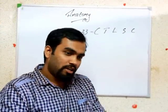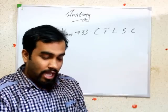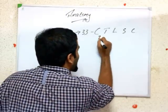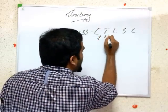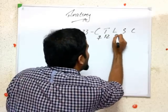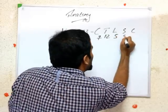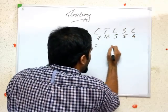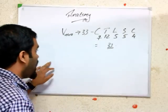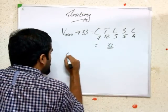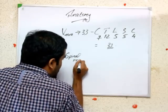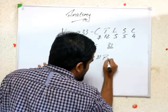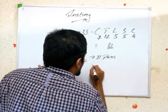A common question: how many vertebrae are there? There are 33 vertebrae. The formula is: Cervical = 7, Thoracic = 12, Lumbar = 5, Sacral = 5, Coccygeal = 4, which gives 33. Now, how many spinal nerves do we have? Spinal nerves are 31 pairs.